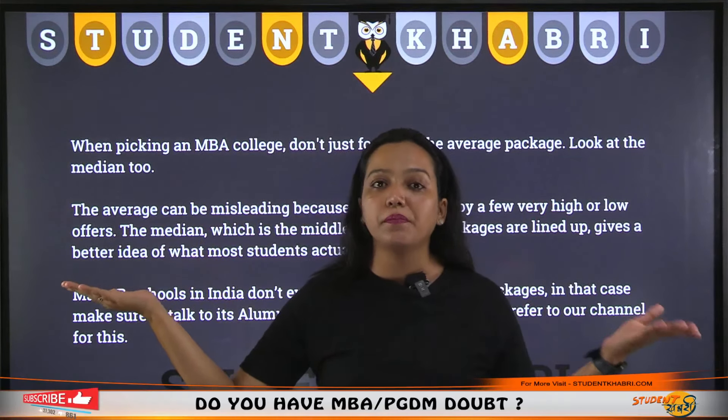Let me explain with an example. Say there is a college where packages offered to students A, B, C, D, and E are 11, 10, 13, 12, and 14 lakhs respectively. When we calculate the average package, we sum all these packages. But if instead of 14, one student got 1 crore, we add that too and divide by the number of students. So the average package of that college becomes significantly inflated — for the base case it would be 12 lakhs.